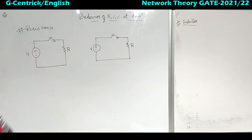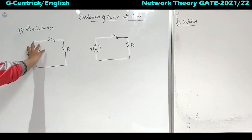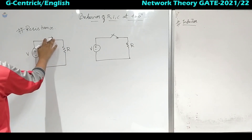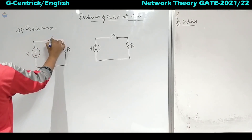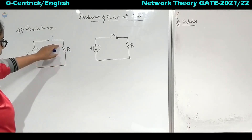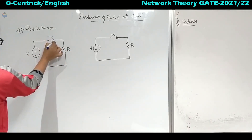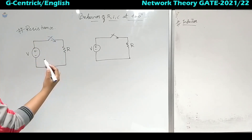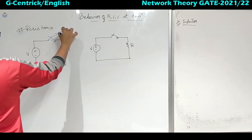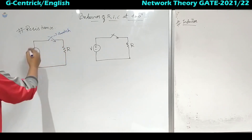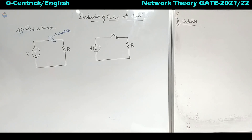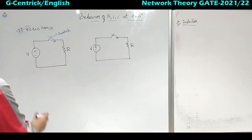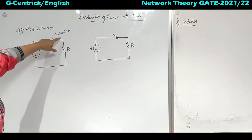First we will take the resistance. We have a voltage source and this symbol is called a switch. When there is no arrow it is called an open switch, and there is a resistor. When I draw the arrow downwards it means the switch is in the closed position, and there will be some amount of current flowing. So this is V and this is R.